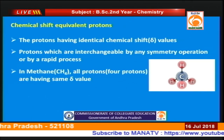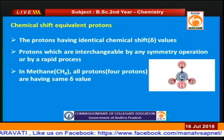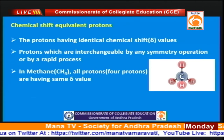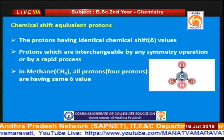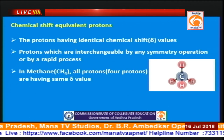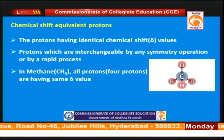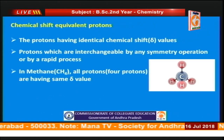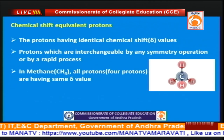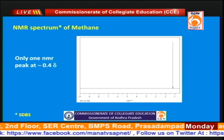Now let us discuss the concept of chemical shift equivalent protons. Protons having the same or identical chemical shift values are known as chemical shift equivalent protons. Whenever protons are interchangeable by a rapid process or by any symmetry operation — such as rotation about an axis, reflection from a plane, or inversion from a center — and we can interchange the positions of the protons, then we say they are chemical shift equivalent protons with the same δ value. For example, in methane all four protons have the same δ value because of its Td symmetry, and the NMR spectrum of methane shows only one peak at 0.4 δ.